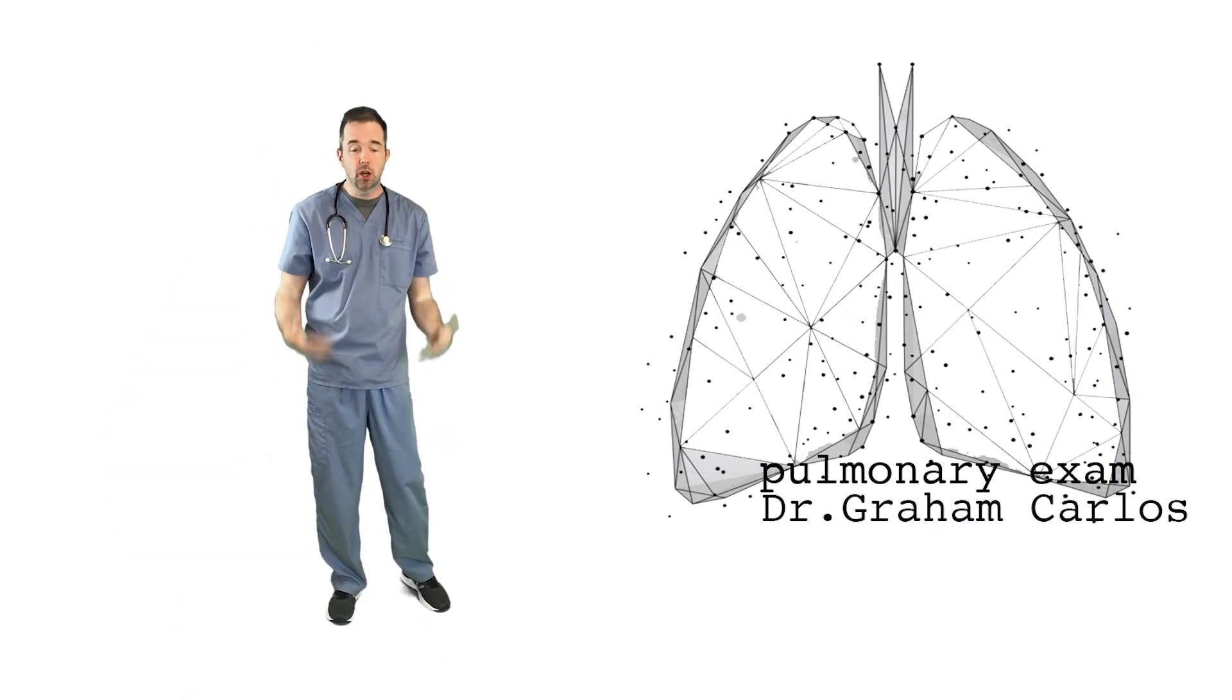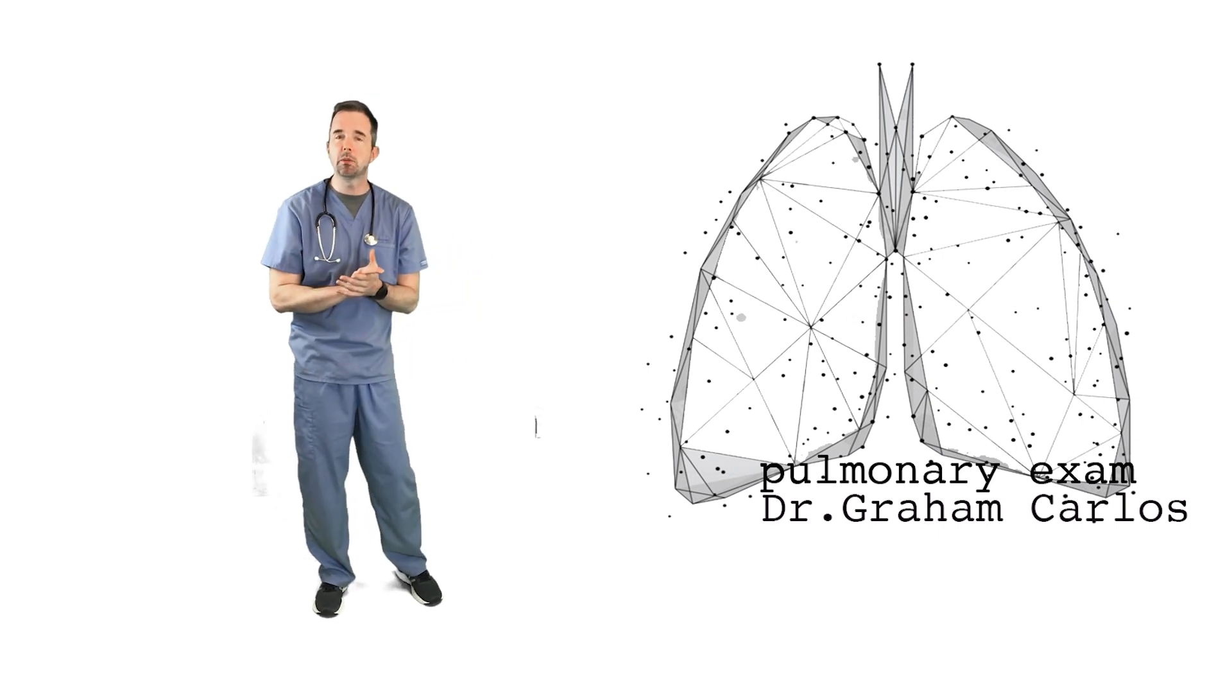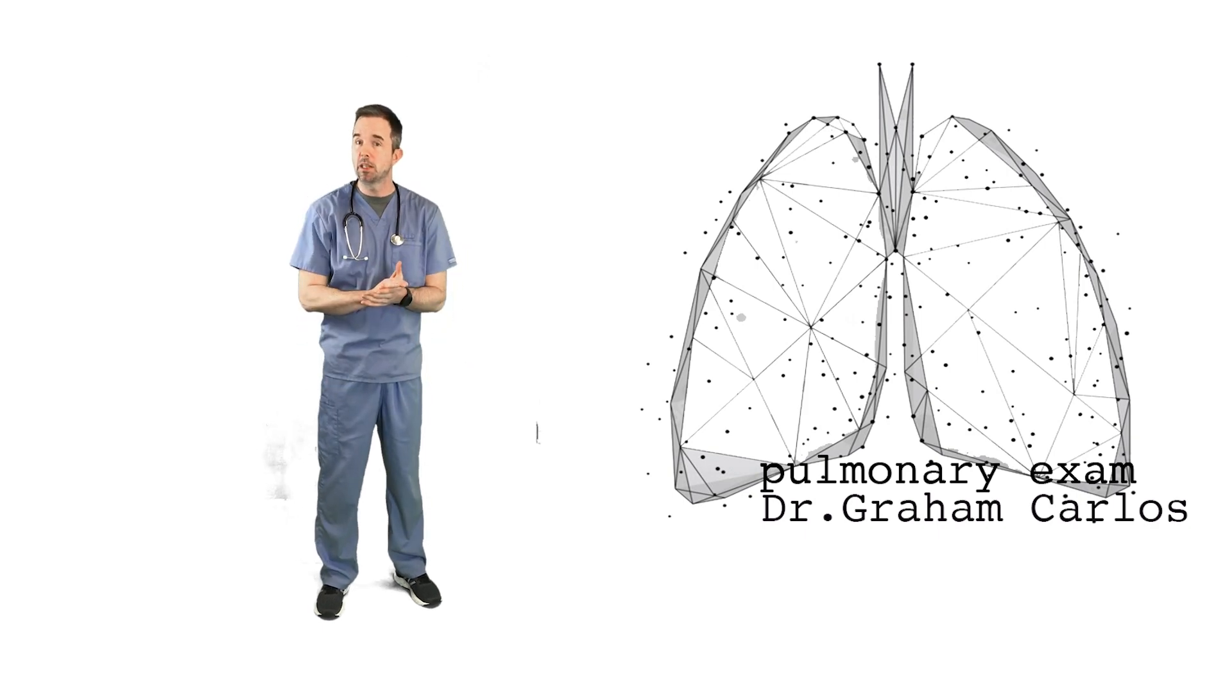For example, starting from the bottom, I'm looking for lower extremity edema. I'm checking for pitting edema because right heart failure, a sign of cor pulmonale from lung failure, can manifest as edema.